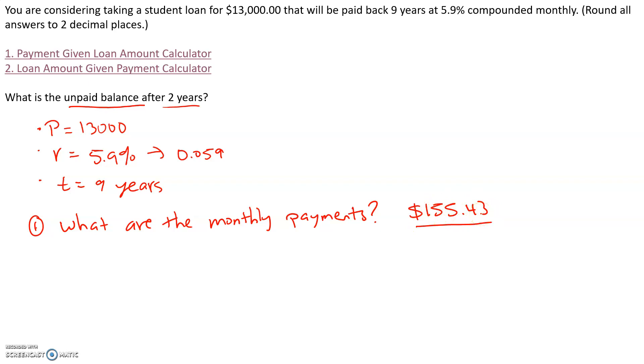So our monthly payment is $155.43. This is how much money we're paying each month for two years, and our goal is to figure out how much money we still have left to pay — what is the unpaid balance. This brings us to part two.